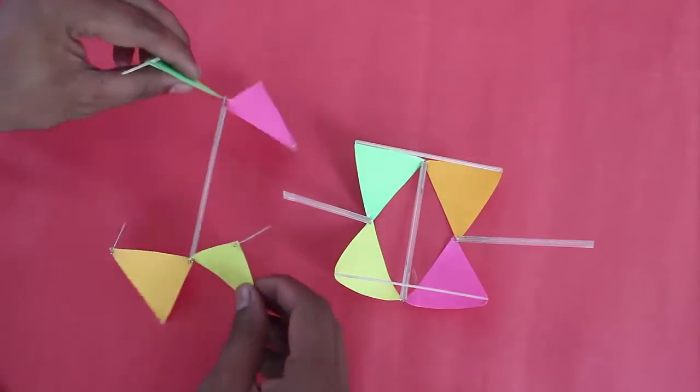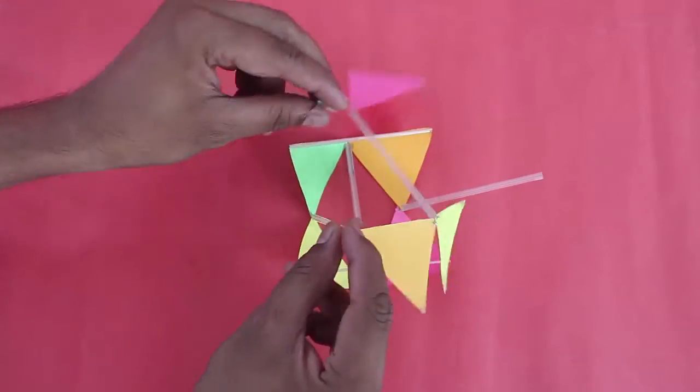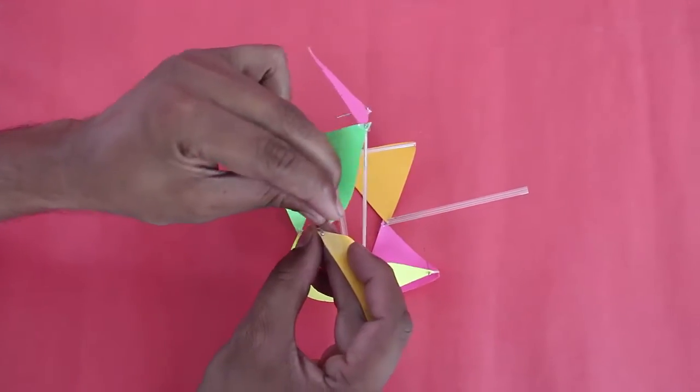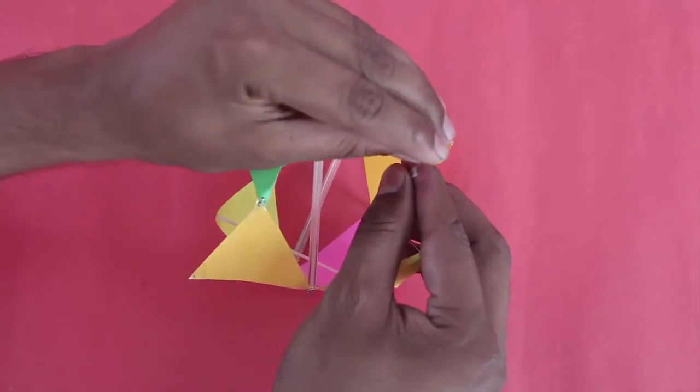Remember that all the pins in the 8 triangles, that is 24 pins, will go into the 24 holes on both ends of the 6 stirrers.